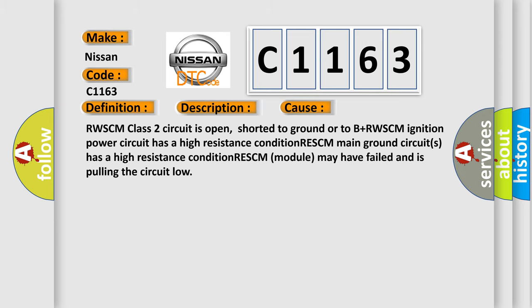This diagnostic error occurs most often in these cases: RwSCM class 2 circuit is open, shorted to ground or to B plus. RwSCM ignition power circuit has a high resistance condition. RwSCM main ground circuits has a high resistance condition. RwSCM module may have failed and is pulling the circuit low.